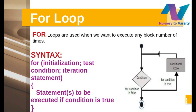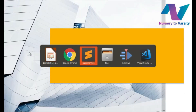Looking at the for loop flowchart: first, initialization sets a variable. Then the condition is checked — if false, the loop breaks; if true, the statements execute. Then the iteration statement runs, incrementing the value, and we go back to check the condition again. All three parts — initialization, condition, and iteration — are optional.